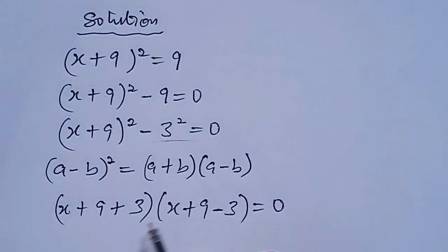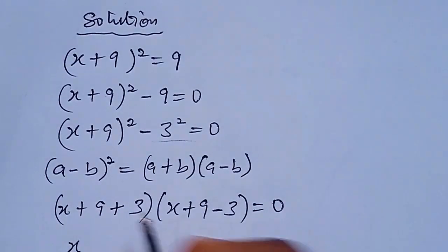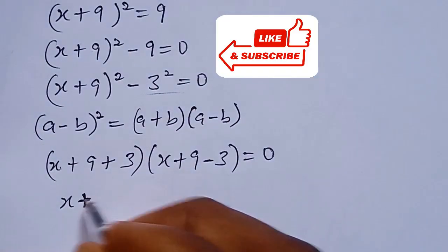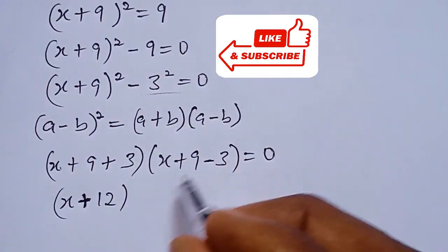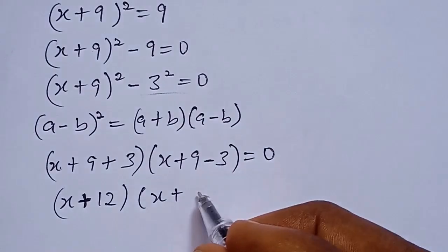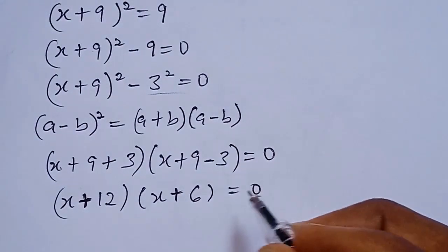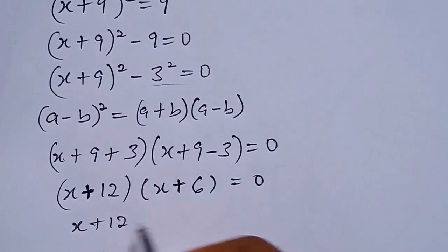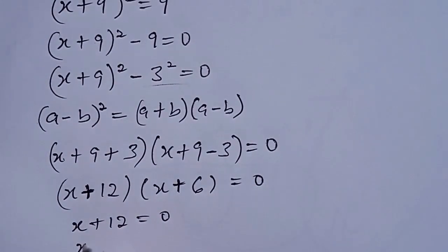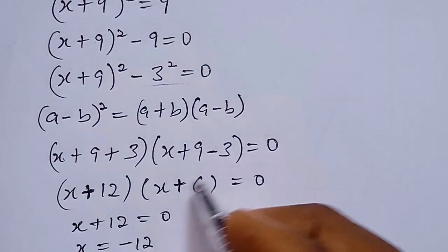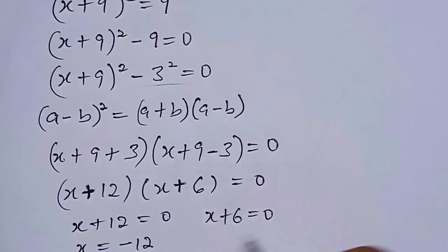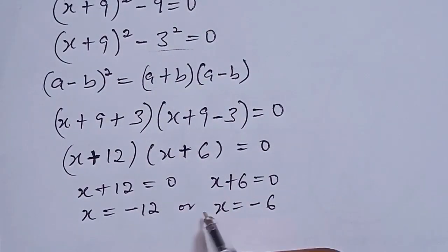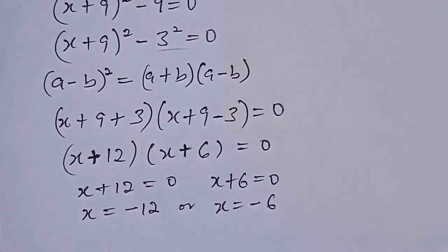So here we simplify what we have in the two brackets. This becomes x plus — 9 plus 3 gives us 12 — close the bracket. Then for this, x plus 9 minus 3 gives us 6 — close the bracket — everything equals 0. So from here we can now solve for x: x plus 12 equal to 0 means x equal to minus 12. Also x plus 6 equal to 0 means x equal to minus 6. So we have x equal to minus 12 or x equal to minus 6. This is for the first method.